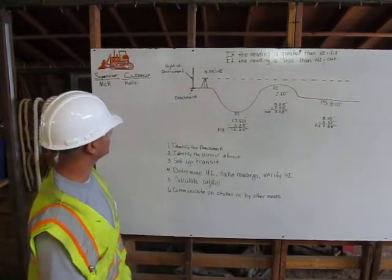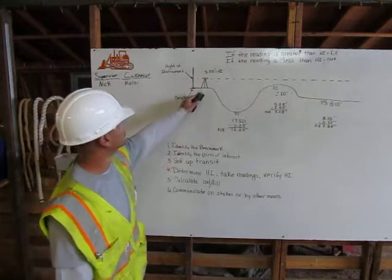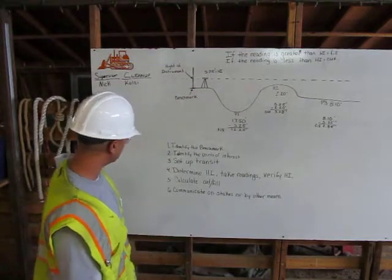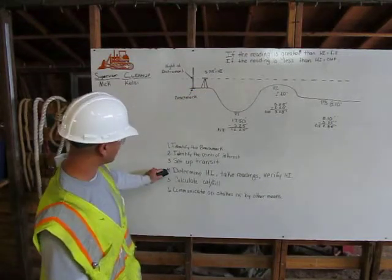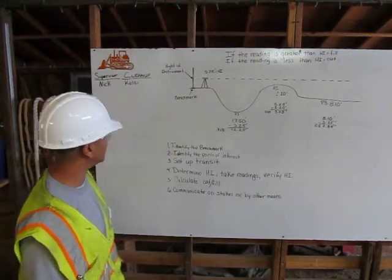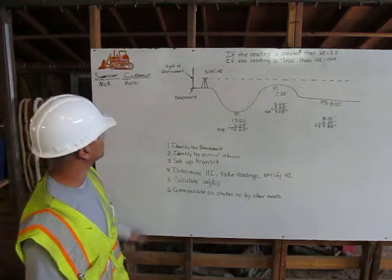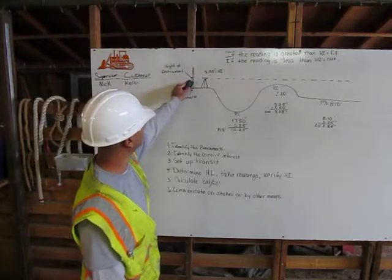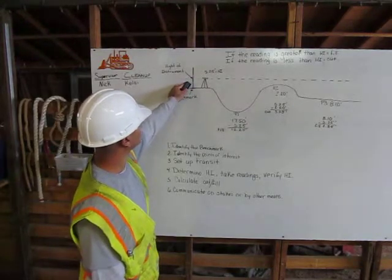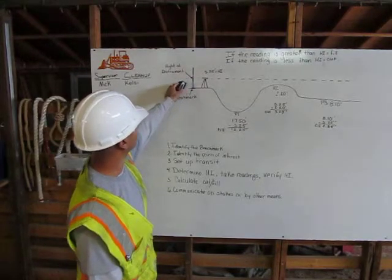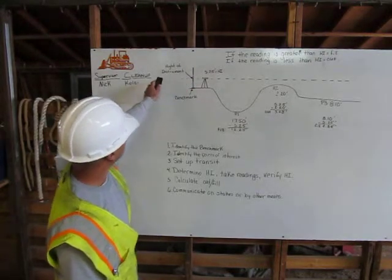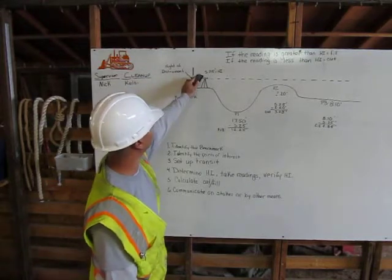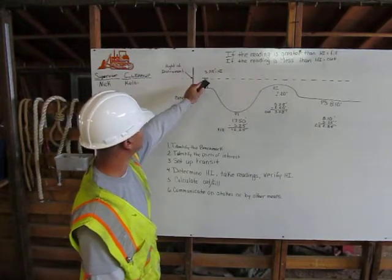Step three: set up transit. This represents my transit. Step four: determine height of instrument. With my engineer's rule and transit, I'm going to shoot it and come out to my height of instrument, which is 5.25 feet.